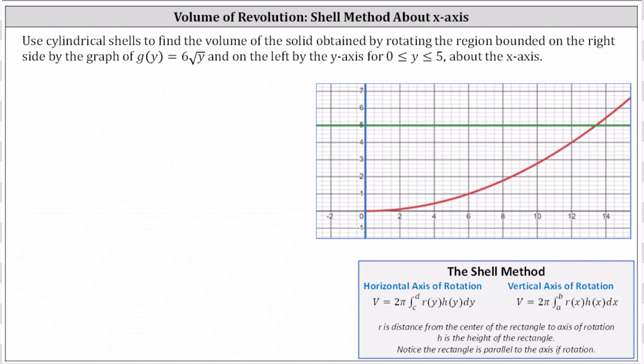Use cylindrical shells to find the volume of the solid obtained by rotating the region bounded on the right by the graph of g(y) = 6√y, graphed in red, and on the left by the y-axis, graphed in blue, for y over the closed interval from zero to five, about the x-axis.